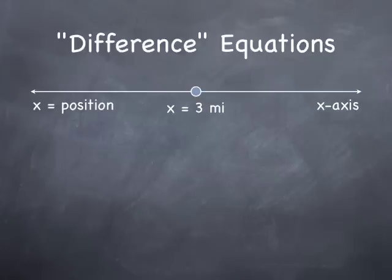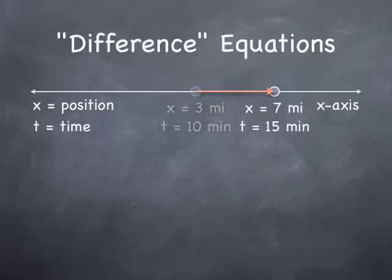Here we are at the 3-mile marker after 10 minutes. Five minutes later, we are at the 7-mile marker. The change in position, dx, or the difference in x, is 4 miles.